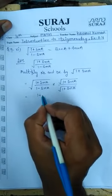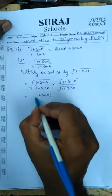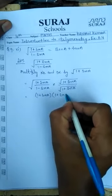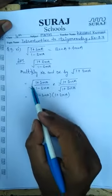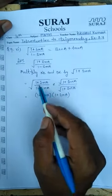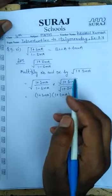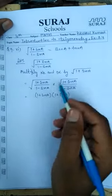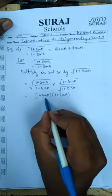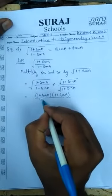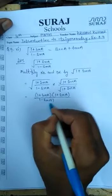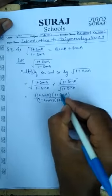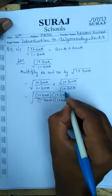Since both square roots in the numerator have the same power, we can write the numerator as 1 plus sin A into 1 plus sin A. In the denominator, the square roots are combined as square root of 1 minus sin A into 1 plus sin A.